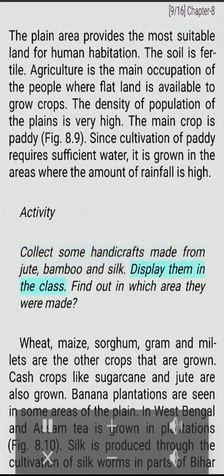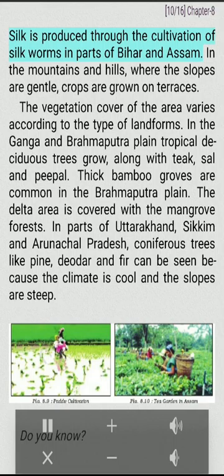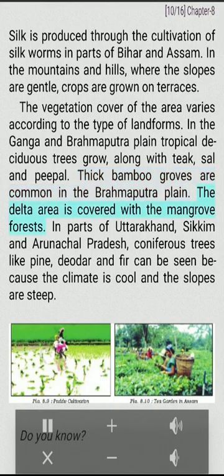Collect some handicrafts made from jute, bamboo and silk. Wheat, maize, sorghum, gram and millets are the other crops that are grown. Cash crops like sugarcane and jute are also grown. Banana plantations are seen in some areas of the plain. In West Bengal and Assam, tea is grown in plantations. Silk is produced through the cultivation of silkworms in parts of Bihar and Assam. In the mountains and hills where the slopes are gentle, crops are grown on terraces. The vegetation cover varies according to the type of landforms. In the Ganga and Brahmaputra Plain, tropical deciduous trees grow along with teak, sal and peepal. Thick bamboo groves are common in the Brahmaputra Plain. The delta area is covered with mangrove forests. In parts of Uttarakhand, Sikkim and Arunachal Pradesh, coniferous trees like pine, deodar and fir can be seen because the climate is cool and the slopes are steep.